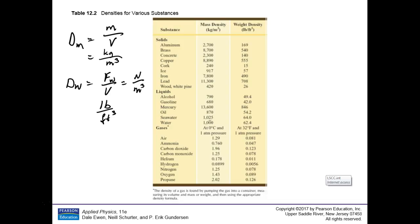Here are some of the densities from the table. All materials — solids, liquids, and gases — have densities. Aluminum is 2,700 kilograms per cubic meter, which would be about 2.7 tons per cubic meter — a big number. So what we usually use, even though it's not SI, is grams per cubic centimeter: 2.7 — much more reasonable. In the US customary system that's 169 pounds per cubic foot. Brass is 8,700, or 8.7 grams per cubic centimeter.